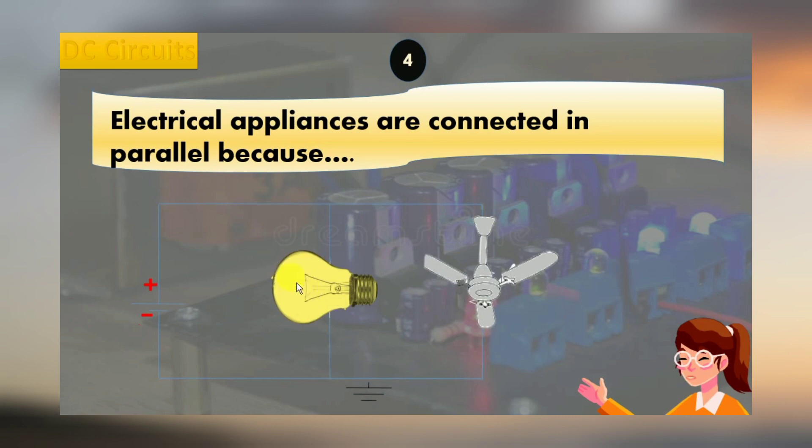Number one: for proper operation, each appliance receives the required voltage. Number two: it is possible that each component has its own switch to control it. Number three: if one appliance malfunctions, it has no effect on the other appliances.